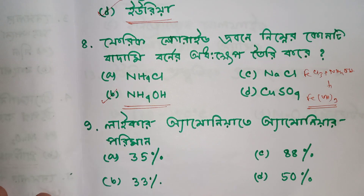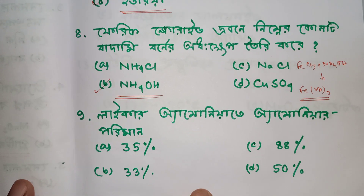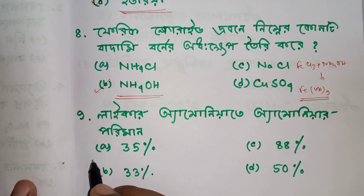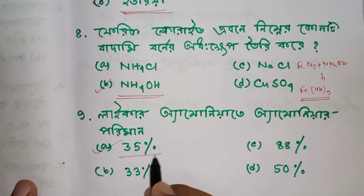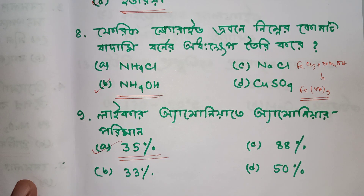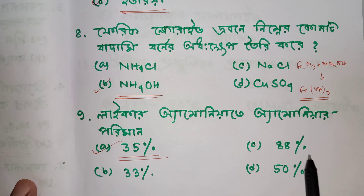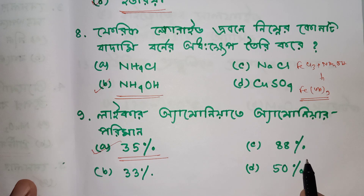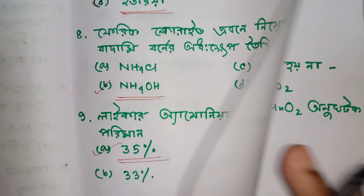Liquor Ammonia may have 35% — his name is Liquor Ammonia. Don't forget about 0.88. You will see the question in the next one.